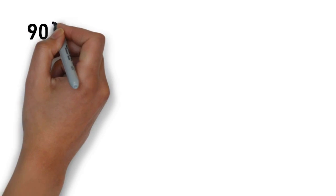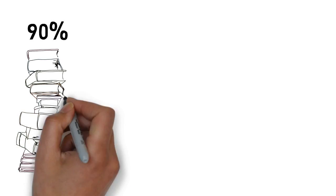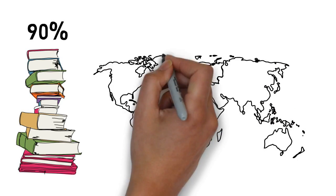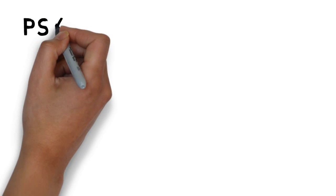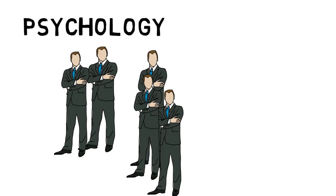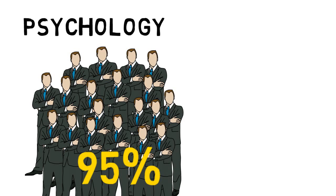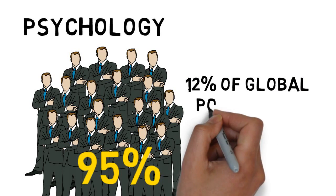To illustrate this point, 90% of peer-reviewed papers on neuroimaging come from studies conducted in Western countries. Compounding this issue in the field of psychology as a whole, 95% of study participants come from countries representing only 12% of the global population.